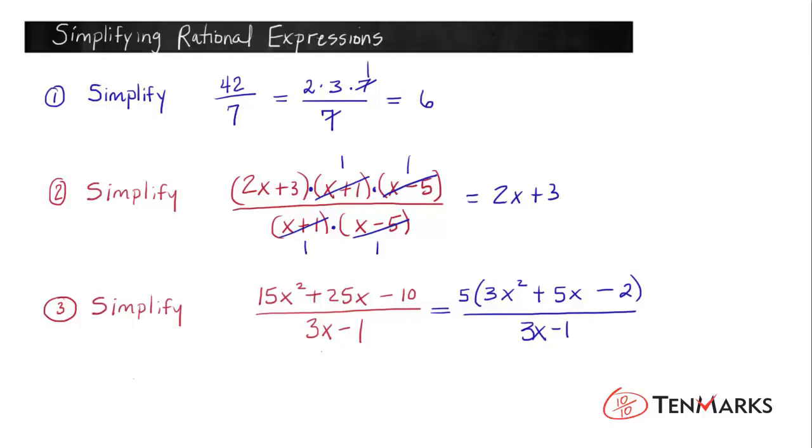I'm going to bring that down here. That's going to give 5 times 3x minus 1 times x plus 2. And then in the denominator, we'll have 3x minus 1. Now the numerator has been completely factored. And we see that that's what we have up here. We have three factors.